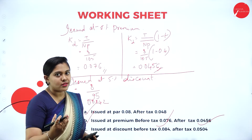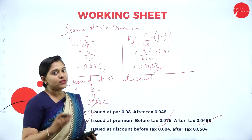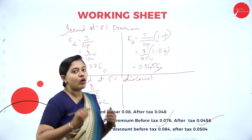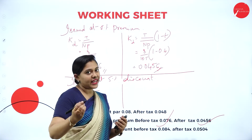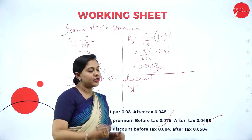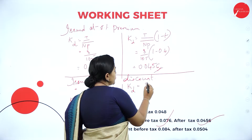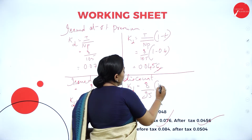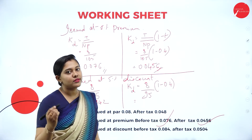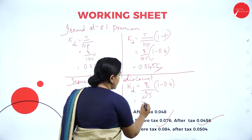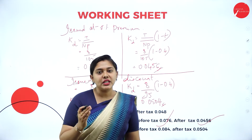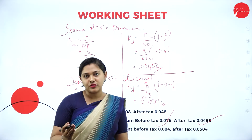Now let us do after tax for issued at a discount. The only change is adding the tax rate. Cost of debt equals interest Rs. 8 divided by net proceeds 95, multiplied by (1 minus tax rate 0.4). Substituting the value, the answer you get is 0.0504. This is how you calculate your irredeemable problem — before tax and after tax.